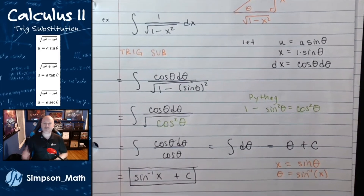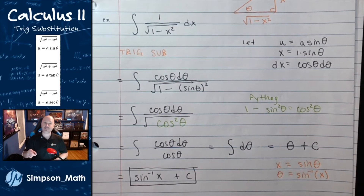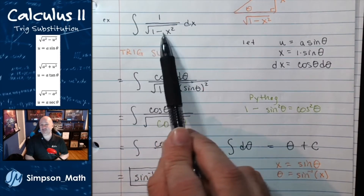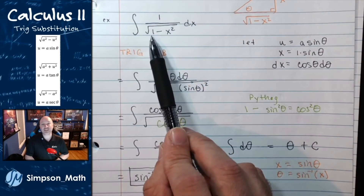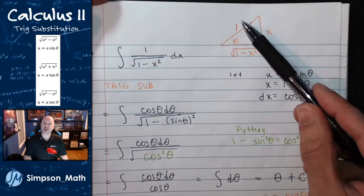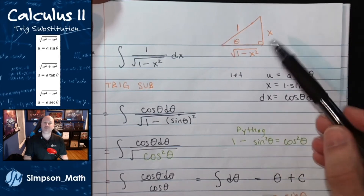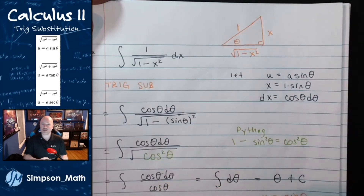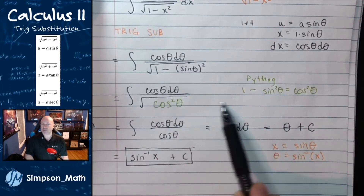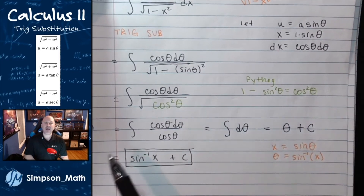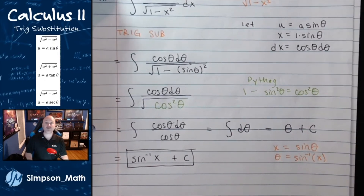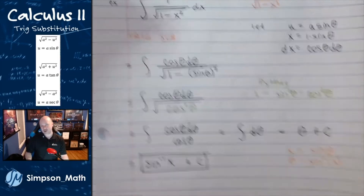These are the motions we go through for trig substitution problems. First, we recognize the square root scenario — the sum or difference of a function squared and a number. Then we draw a triangle, looking for that u over a relationship. We substitute in our trig, the Pythagorean identity happens, we get integrable trig functions, and lastly we turn back into x-land. Let's jump to another scenario — maybe a harder problem.